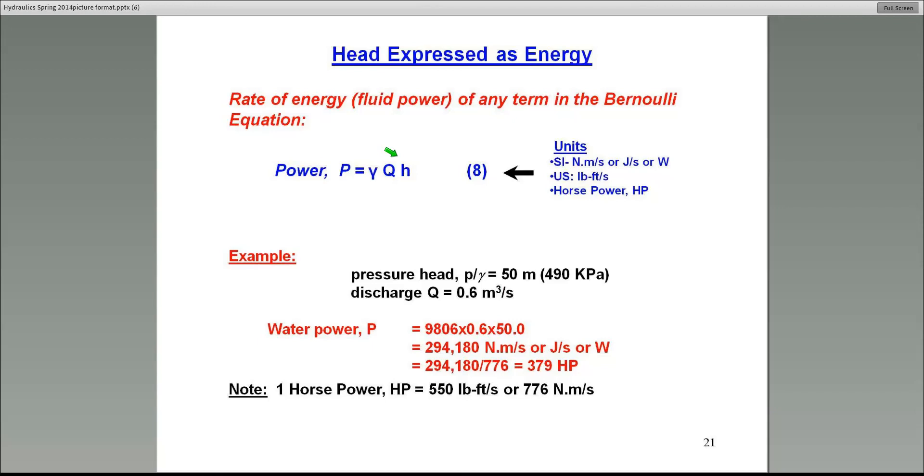Gamma, in my example here, let's go through a small example. Let's say, for example, you have a pressure head, P over gamma, in the Bernoulli equation of 50 meters, which, by the way, turns out to be 490 kilopascals of pressure. That's P over gamma. And Q is, in this case, 0.6 meter cube per second.